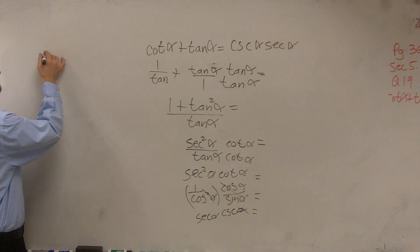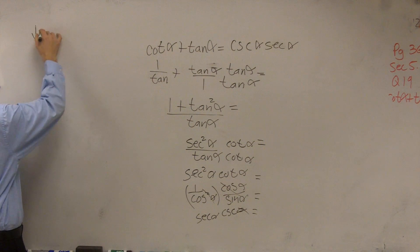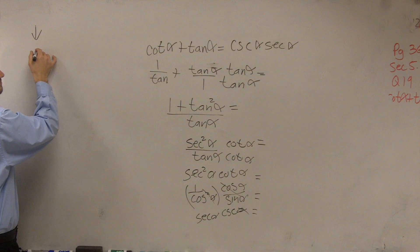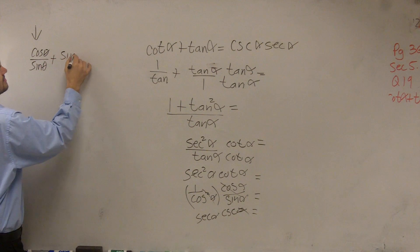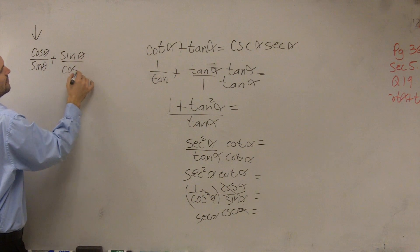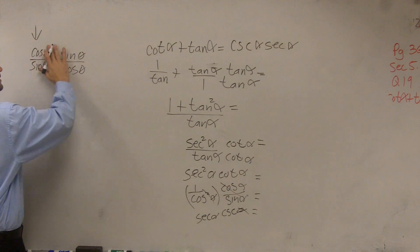So if I was going to still do the left side here, I would have cosine of alpha over sine of alpha plus sine of alpha over cosine of alpha.